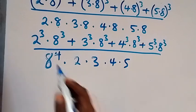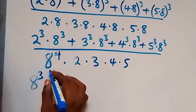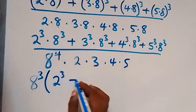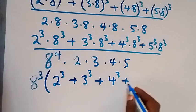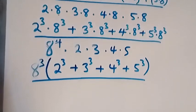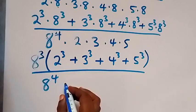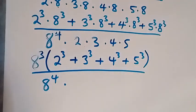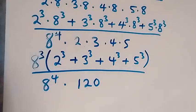From the numerator, 8 raised to power 3 is common, so we factorize it out. We have 8 raised to power 3 times the bracket: 2 raised to power 3 plus 3 raised to power 3 plus 4 raised to power 3 plus 5 raised to power 3, divided by 8 raised to power 4, then multiplied by 2 times 3 times 4 times 5, which gives us 120.